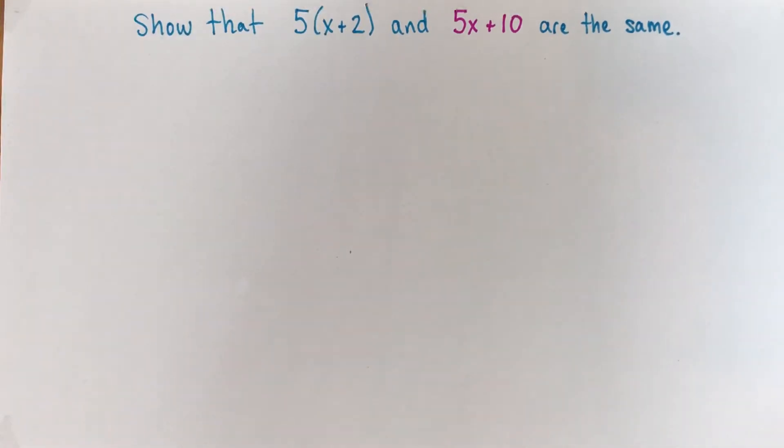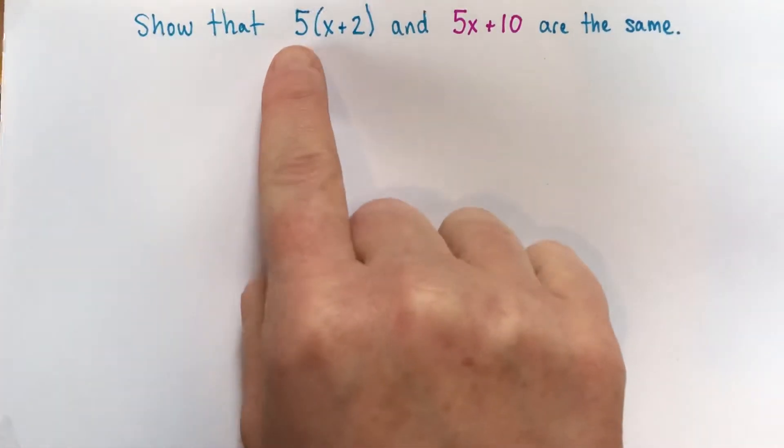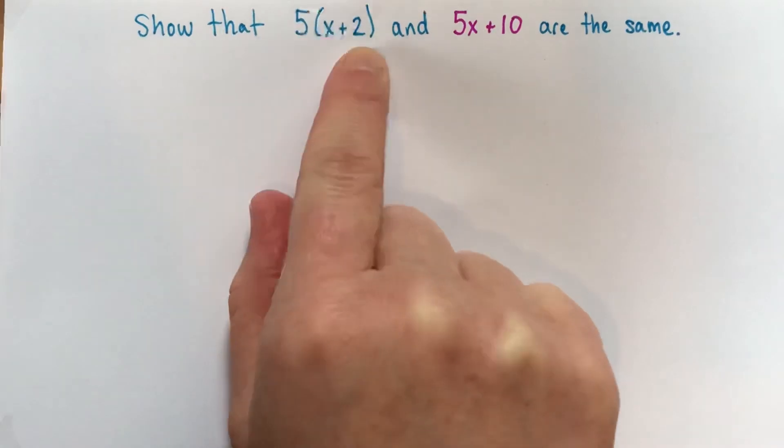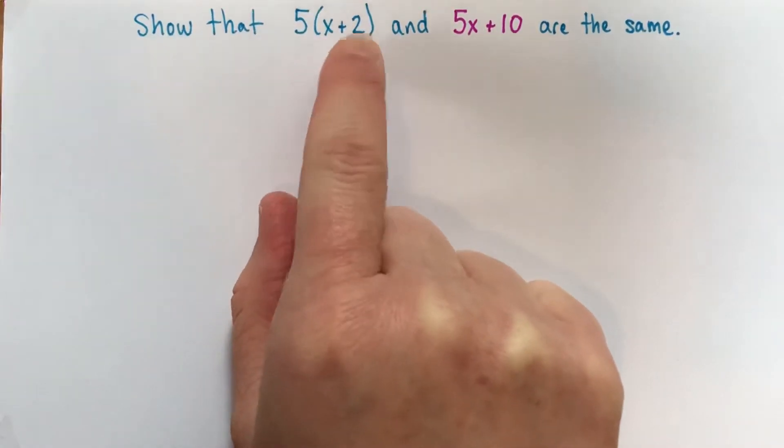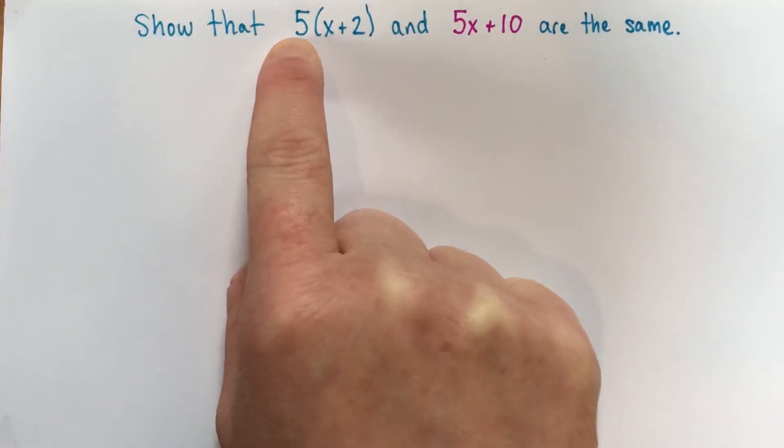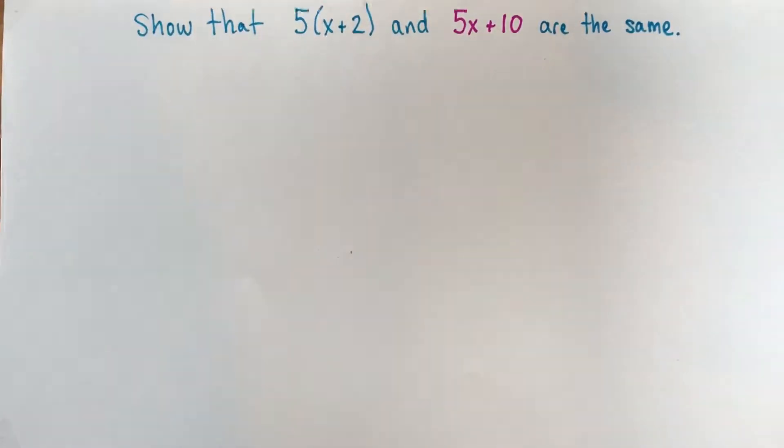Alright, so I'm going to start by showing a picture with my tiles of 5 times x plus 2. It's really important to know that these brackets are a grouping symbol, so they group the x plus 2 together so that we have 5 groups, and in each group there's x plus 2.